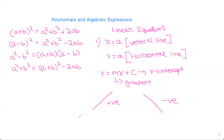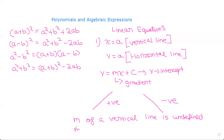The gradient m of a vertical line is undefined, and the gradient m of a horizontal line is 0. So the gradient of a vertical line is undefined and the gradient of a horizontal line is 0.